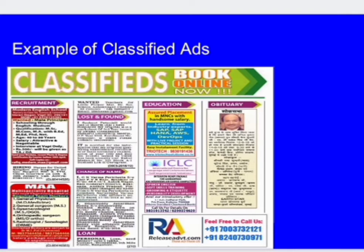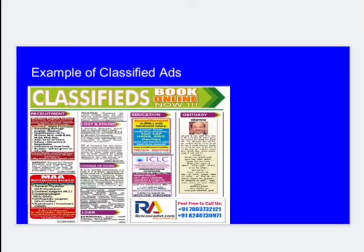For a matrimonial ad seeking a groom: mention the beauty and looks of the girl, upbringing and manners, education, whether working or non-working, age, height, complexion, caste, religion, type of marriage preferred, family background, details of the prospective bridegroom required, and contact address and telephone number. For a groom's ad: mention handsome, smart, well-settled in business or job, income, education, property, complexion, age, height, caste, religion, family background, details of the prospective bride, and contact address and telephone number.